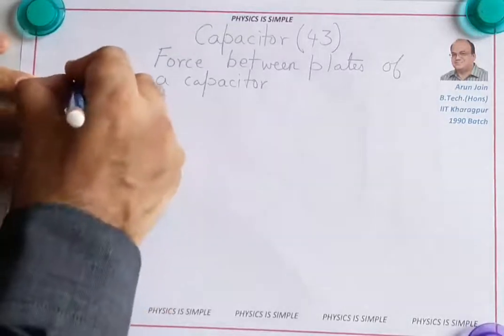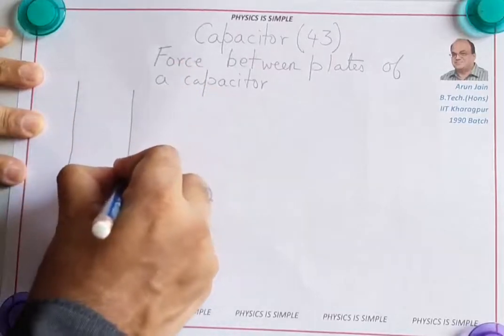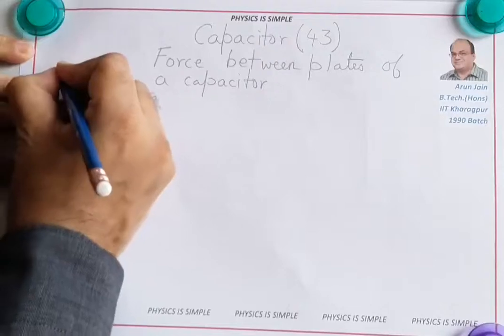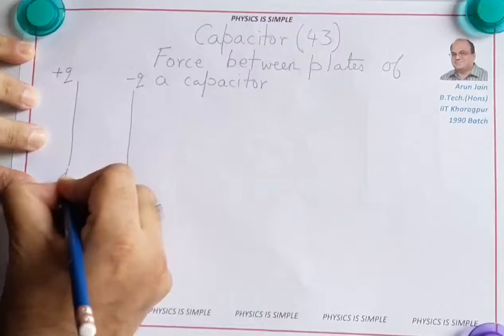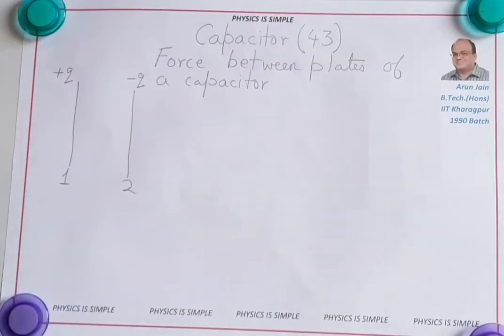In this lesson we look at the force between plates of a capacitor. We know that the plates of a capacitor have equal and opposite charge. So this is plate 1 having charge plus Q, this is plate 2 having charge minus Q.